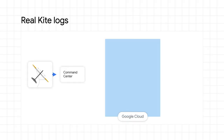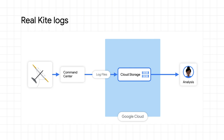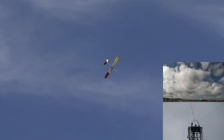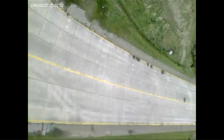As the kite is flying, it would send the logs to the command center on the ground. Once the flight is done, the logs are then sent to Google Cloud Storage for engineers to analyze again. They repeat the same process — look at the data, analyze it, make modifications to those configurations, and then go back to the first stage. Run a bunch of simulations, verify that those changes will make the kite fly better and won't crash, and repeat the entire cycle.